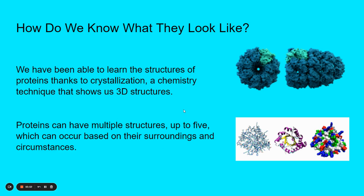How do we know what proteins look like? We've been able to learn the structures of these proteins thanks to crystallization, which is a chemistry technique that shows us 3D structures. Here is a crystallization of a protein and you can see its shape and how it folds in 3D. We also oftentimes show proteins in these squiggly line diagrams, which give the general shape — these are really good approximations. Proteins can also have multiple structures, up to five, which can occur based on their surroundings and circumstances.